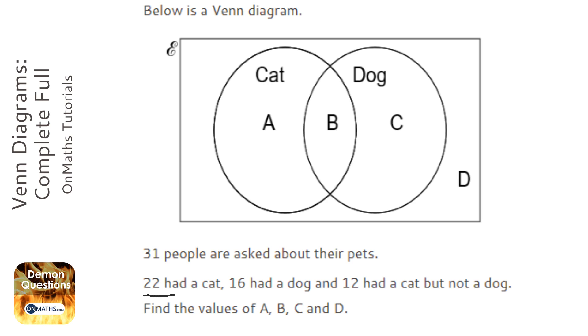22 have a cat. Now at the moment we can't fill anything in because the cat is split between A and B. Okay, 16 people have a dog. Again, we can't fill out anything yet because the dog is split between B and C.